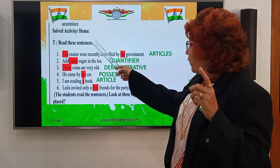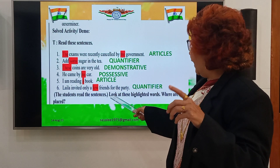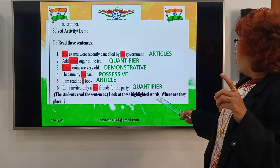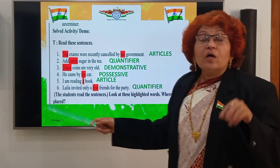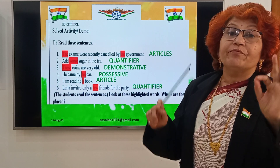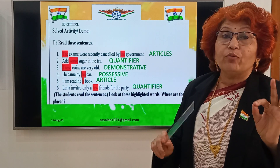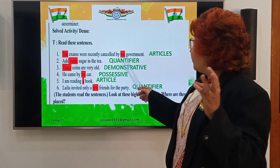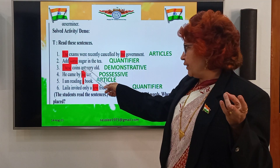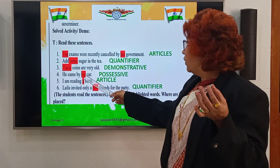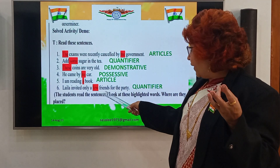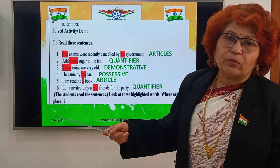We have read these sentences and looked at the highlighted words. Where are they placed? All these determiners are placed in front of the noun. See: exams is a noun, government is a noun, sugar is a noun, coins are nouns, car is a noun, book is a noun, friends is a plural noun.